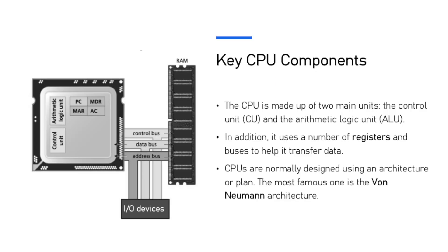The CPU is made up of two main units: the control unit, often abbreviated to CU, and the arithmetic logic unit, abbreviated to ALU. In addition, it uses a number of registers and buses to help it transfer data from many different types of input and output devices. CPUs are normally designed using an architecture or a plan, and the most famous one is the von Neumann architecture, which underpins most modern CPU design.